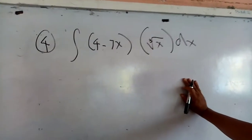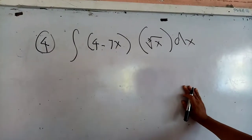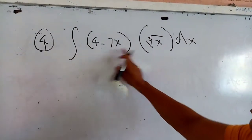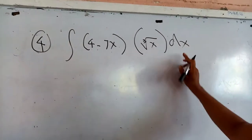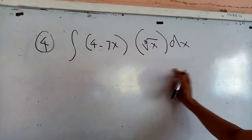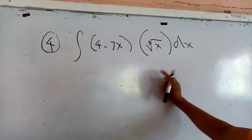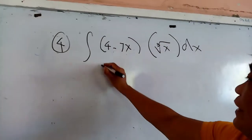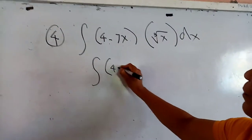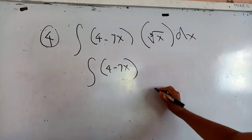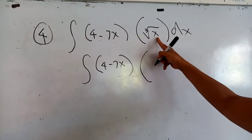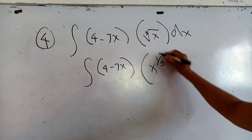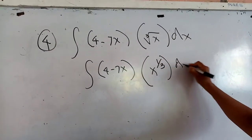We go to problem number 4. You are required to evaluate the integral of (4 minus 7x) multiplied by the cube root of x, times dx. The first thing to do here is to change again the cube root to exponential — that would be the integral of (4 minus 7x), multiplied by x raised to the positive one-third, times differential dx.